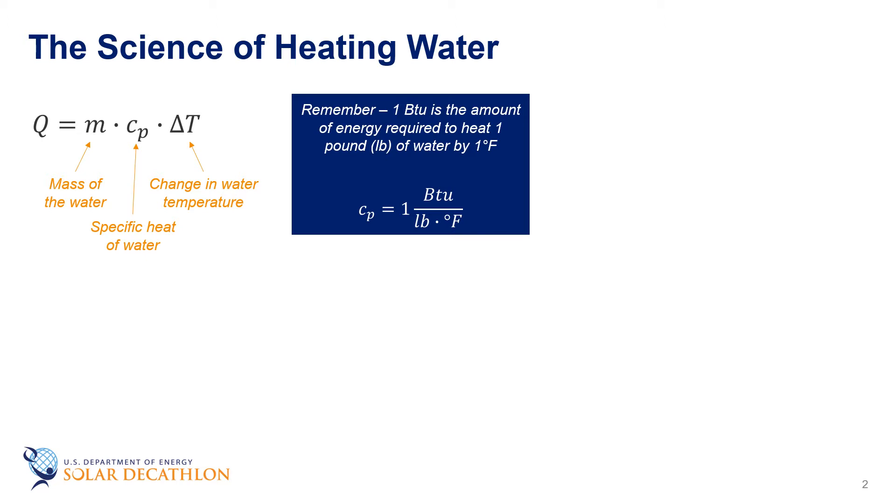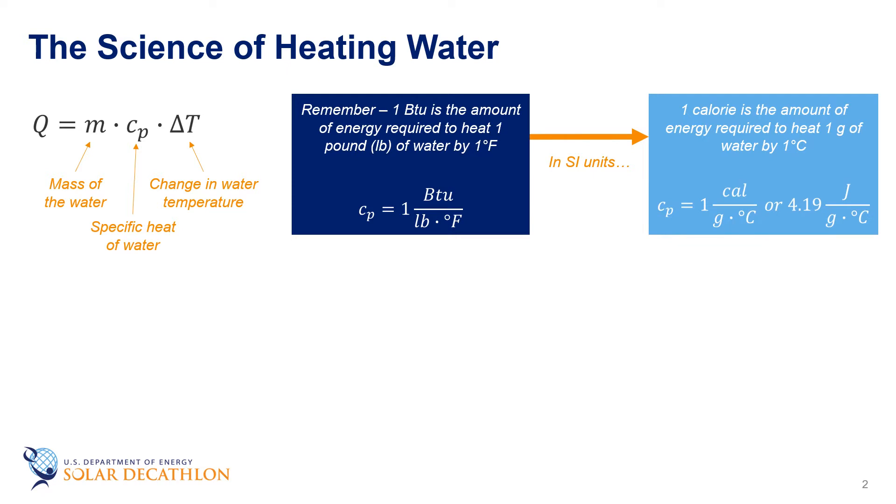The metric system is a bit confusing here as the amount of energy to heat one gram of water one degree Celsius is one calorie. There are 4.19 calories in a joule so the specific heat of water in the metric system is one calorie per gram degree C or 4.19 joules per gram degree C.